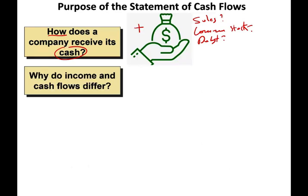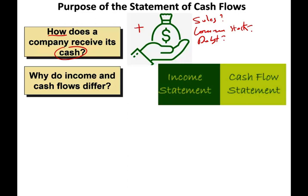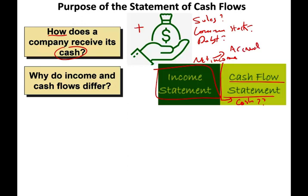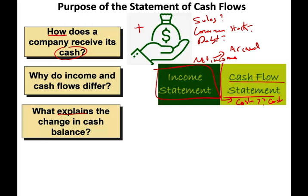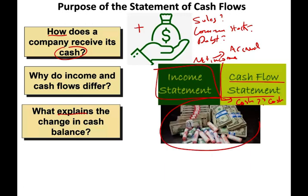Also, why do income and cash flow differ? When you prepare the income statement, you come up with a number called net income or net loss. The statement of cash flow tells us how much of that net income is actually cash. The income statement uses accrual accounting, while the cash flow uses cash accounting. So it converts accrual to cash, and tells you whether on a cash basis you are making money. It also explains the change in the cash balance — how much cash did I have last period versus this period.